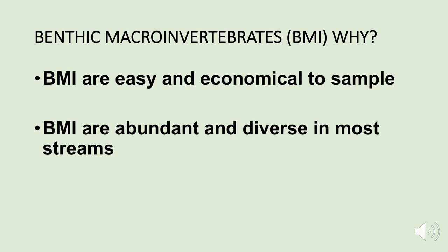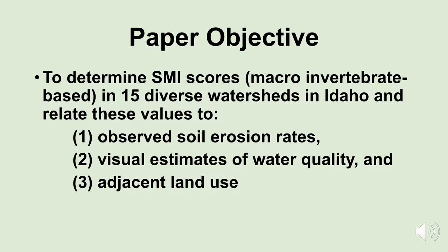What we're after is what we call an SMI score — a macroinvertebrate-based index score. In this study we're going to take a look at 15 different watersheds in Idaho, and we want to relate our macroinvertebrate index to visually observed soil erosion, to visual estimates of water quality, and to adjacent land use.